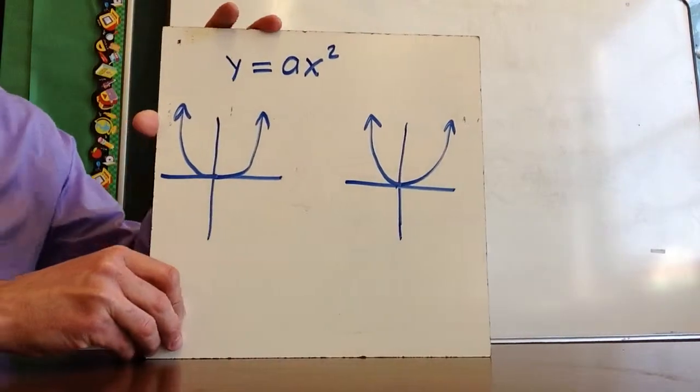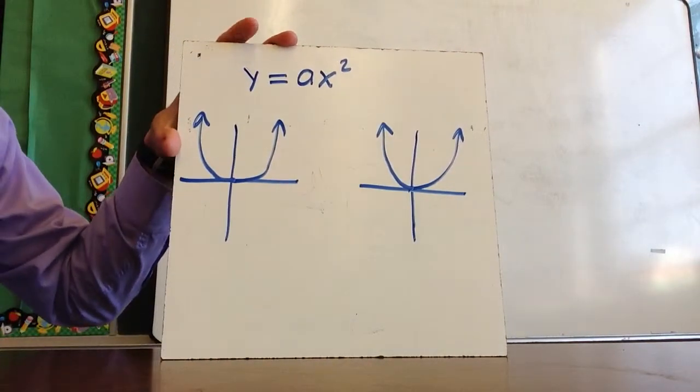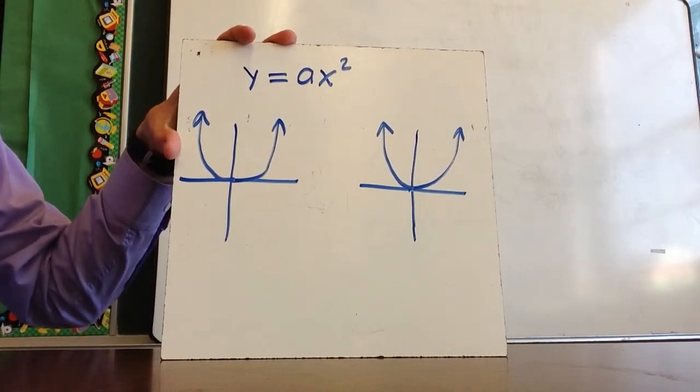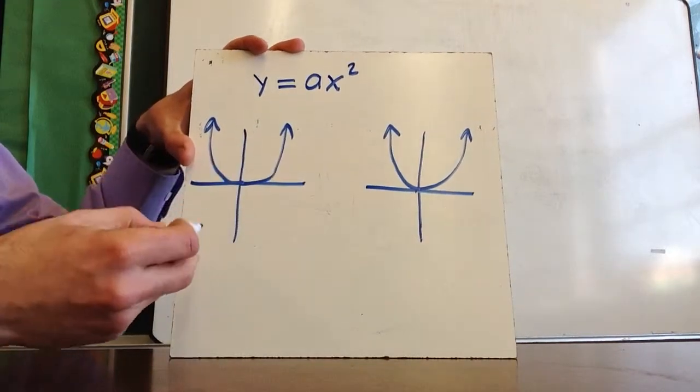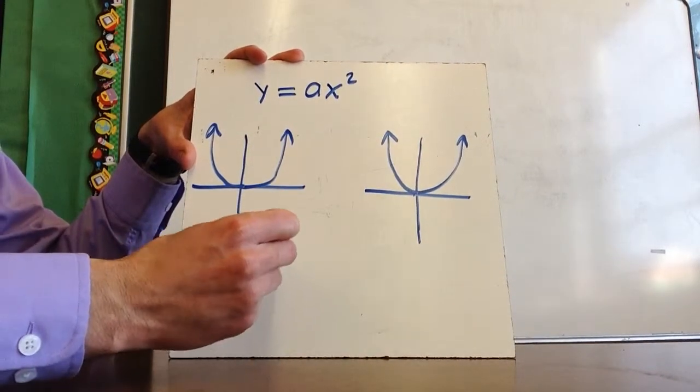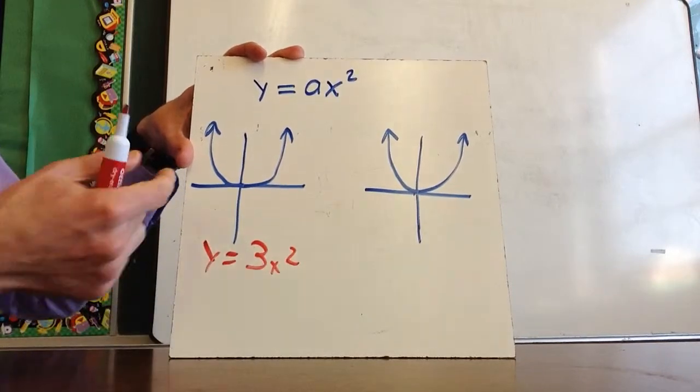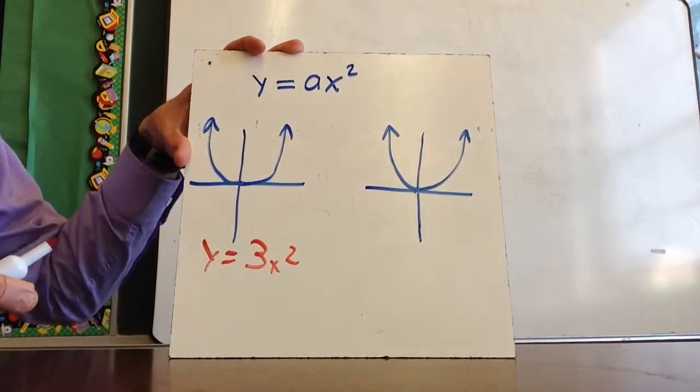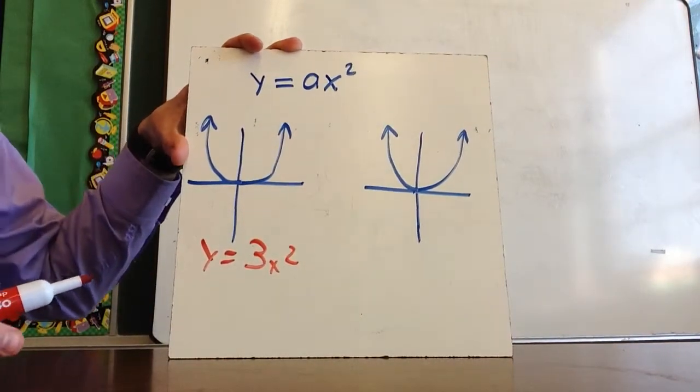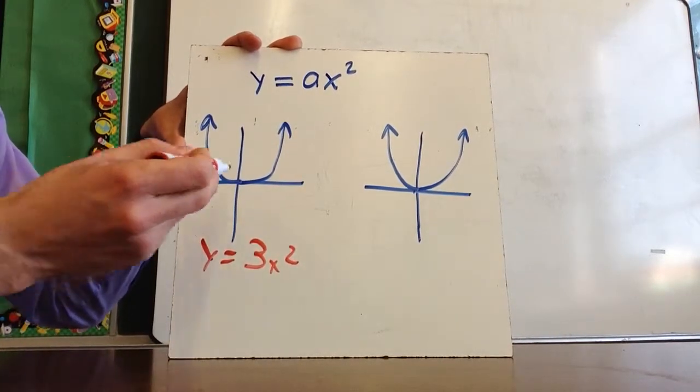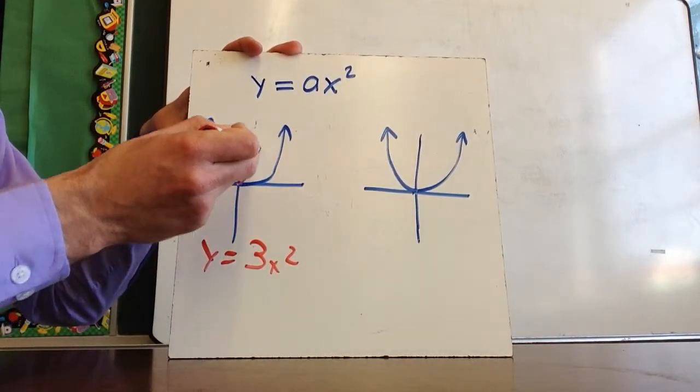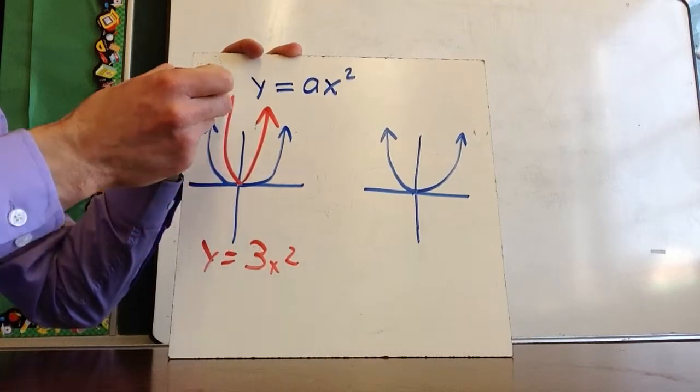The second thing I want to discuss is what happens when you put a number in front of it, the a part. So y = ax². When you change a, for example, if I make this y = 3x², that's going to tighten it closer to the y-axis, or in other words, it turns it more into a V. So y = 3x² would be something like this.